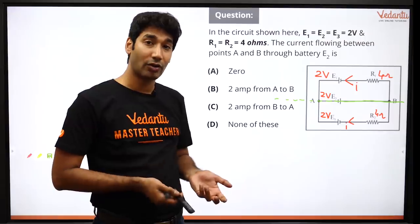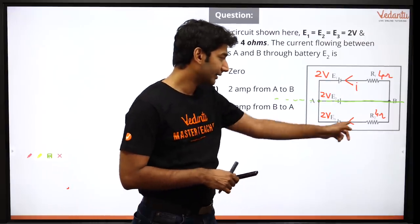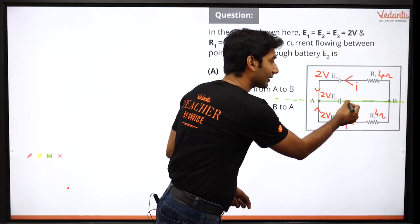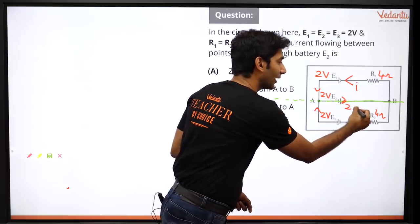So what happens from this, it becomes very simple. The question is, this is i, this is i. Both i and i will meet so here it will become 2i.